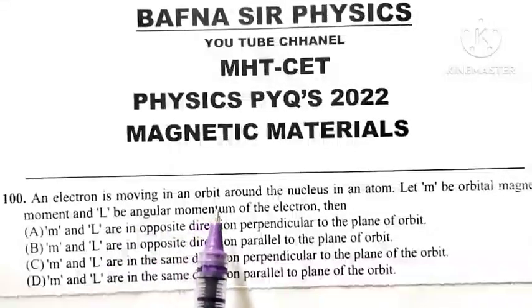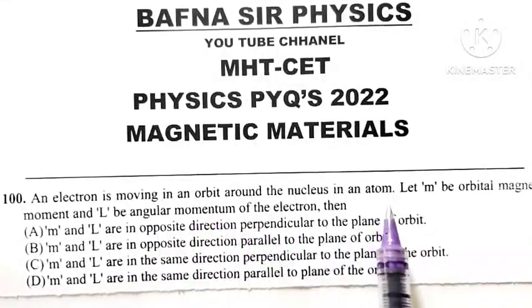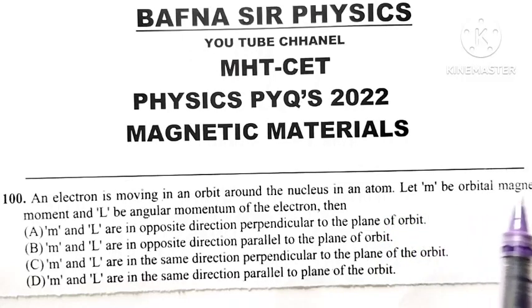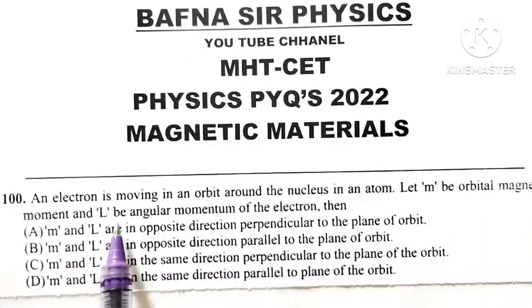An electron is moving in an orbit around the nucleus in an atom. Let m be the orbital magnetic moment and capital L be the angular momentum of electron.